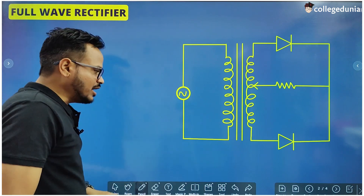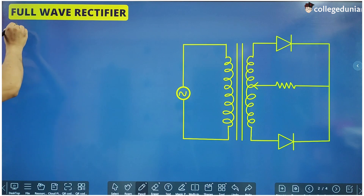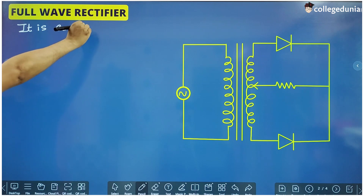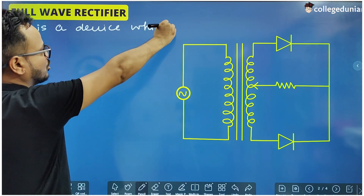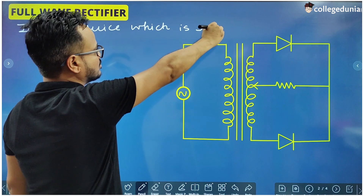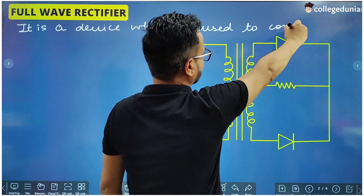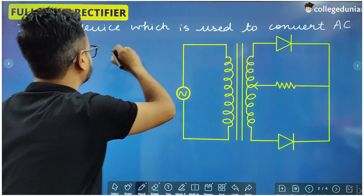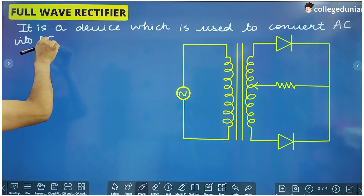Let us start. What is a rectifier? A rectifier is simply a device which converts AC to DC. AC means alternating current and DC means direct current. So, a full wave rectifier is a device which is used to convert AC into DC.